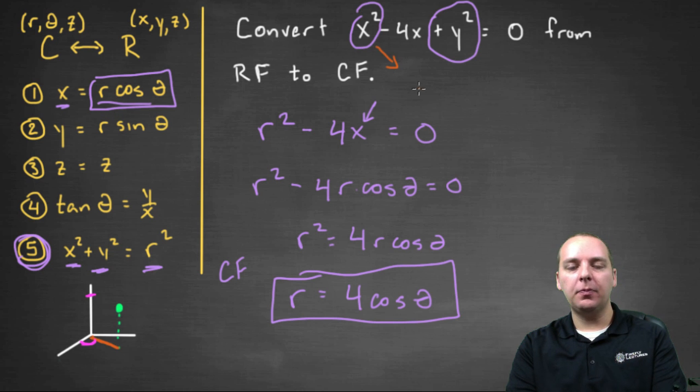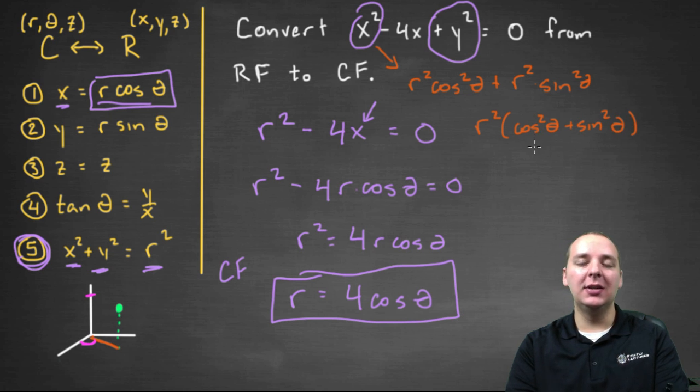The x squared would have been r squared cosine squared theta, and the y squared would have been r squared sine squared theta. If you factor out r squared, you would get cosine squared theta plus sine squared theta. But you should know what that is. Sine squared plus cosine squared is a trig identity, right? That equals one.